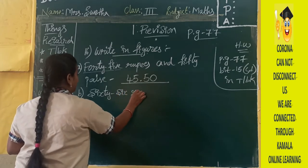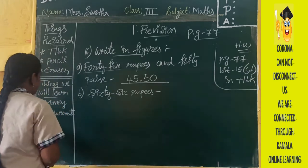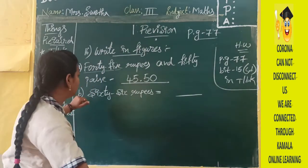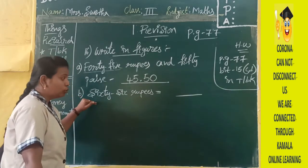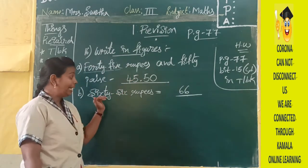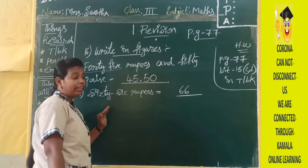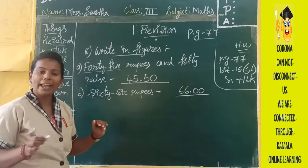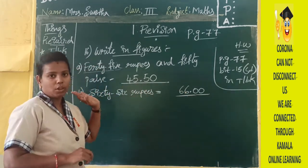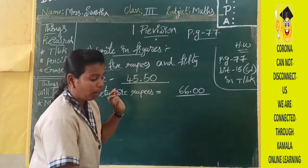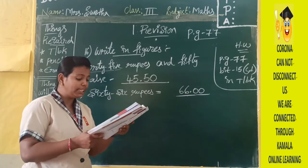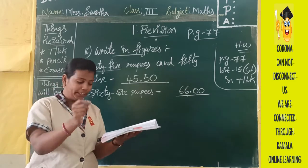B: sixty-six rupees. Here they have given only sixty-six rupees and have not given pies. If they have not given any pies, we will write two zeros in the place of pies. So for sixty-six rupees: 66.00. Next: sixteen rupees and seventy-five pies — you have to write 16.75.